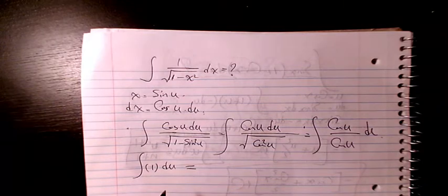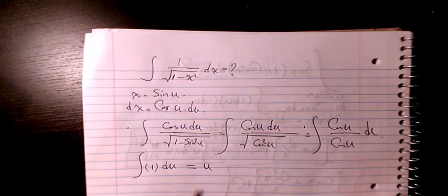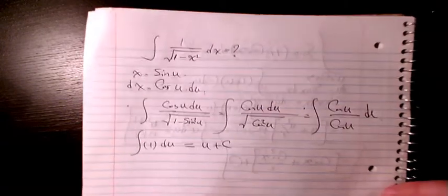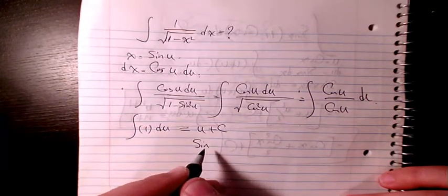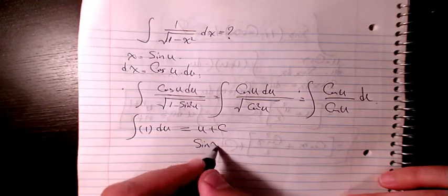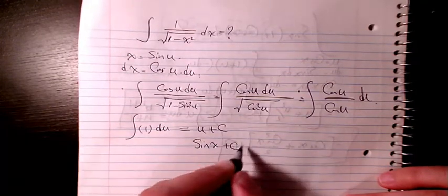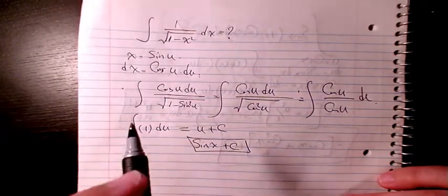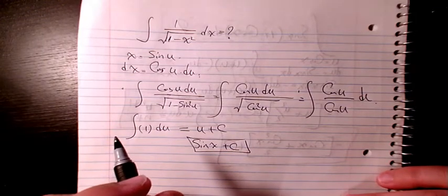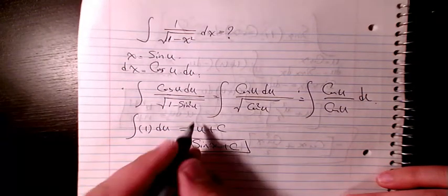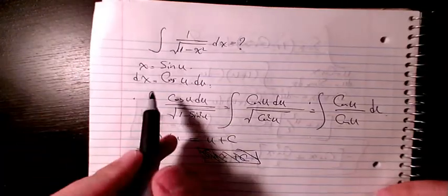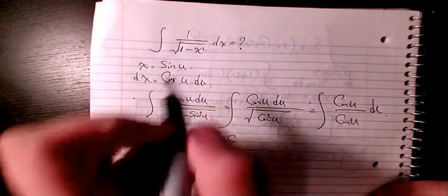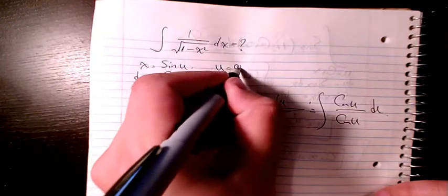integration of 1 du is just u plus c. And u is sine x plus c. Actually, u is here... I need to change it. Since x is sine u, u is arc sine